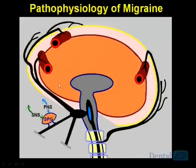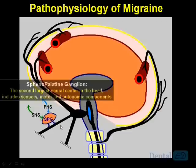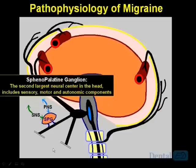Let's look at the pathophysiology of migraine and review some of these structures. Here's the trigeminal nerve — first, second, third division. This is the sphenopalatine ganglia. It's the second largest neural center in the head next to the brain. It includes sensory, motor, and autonomic components — sympathetic and parasympathetic nervous input — and it sits right on the tract of the second division and goes right into the sensory nucleus.